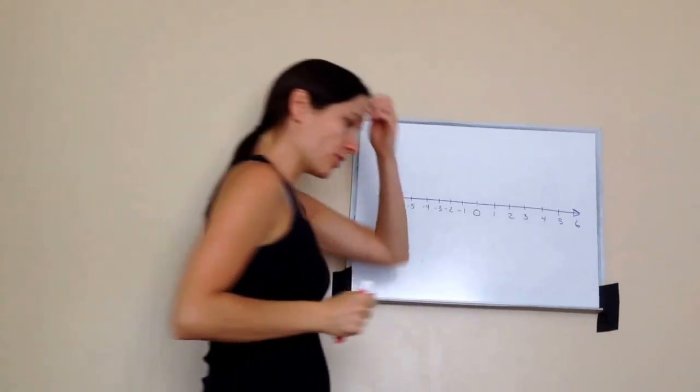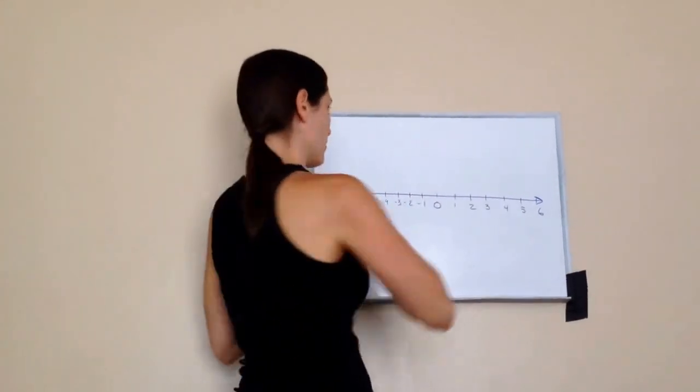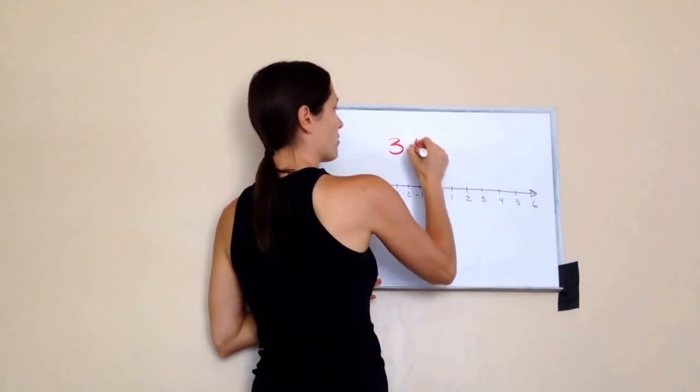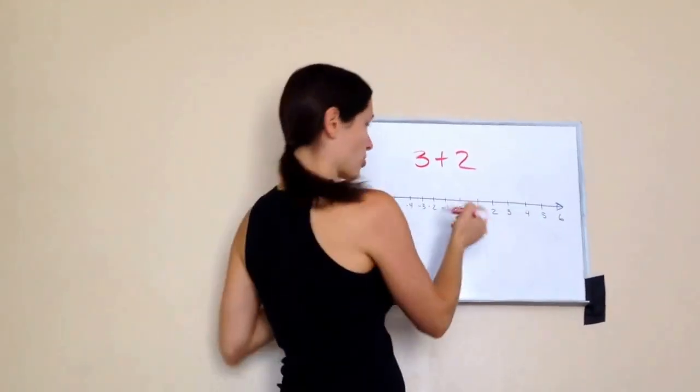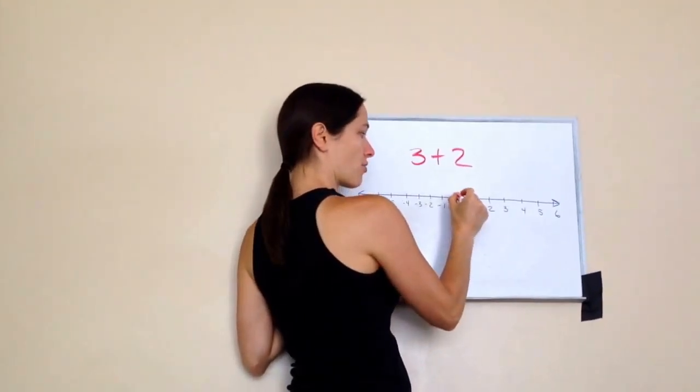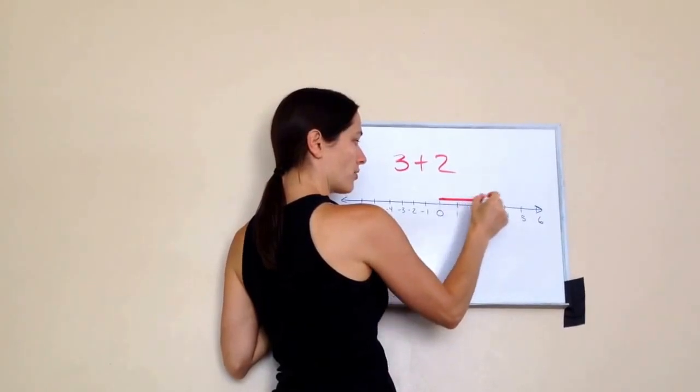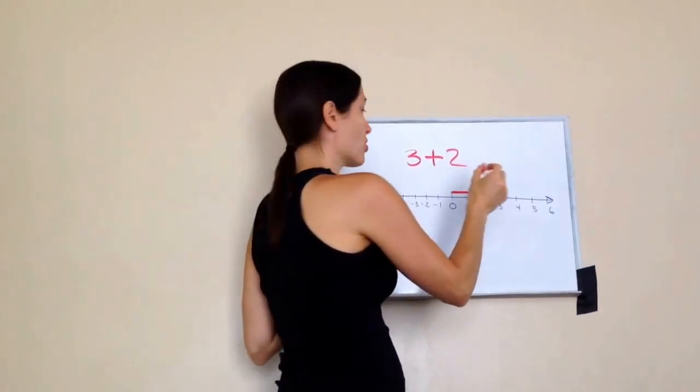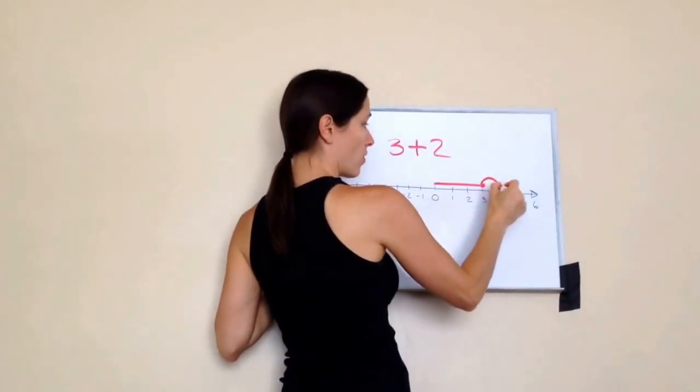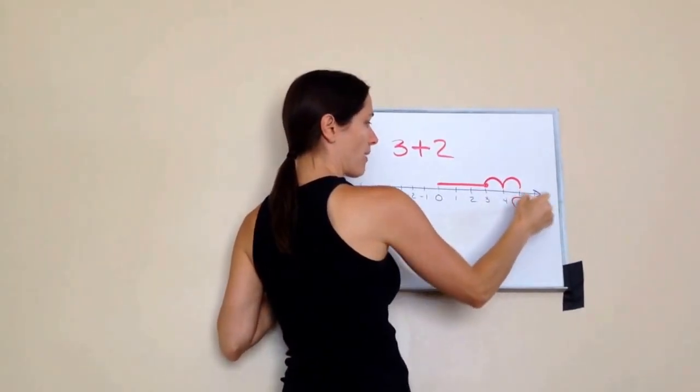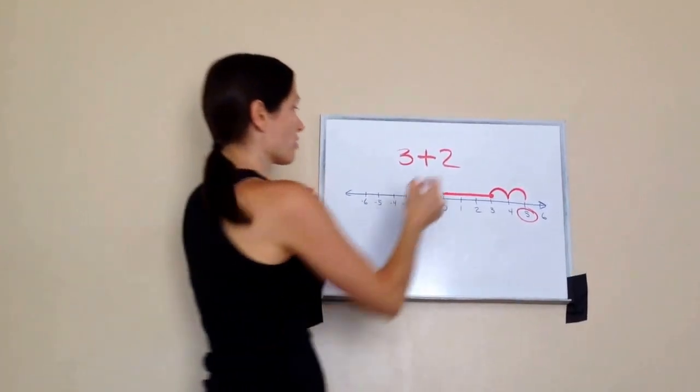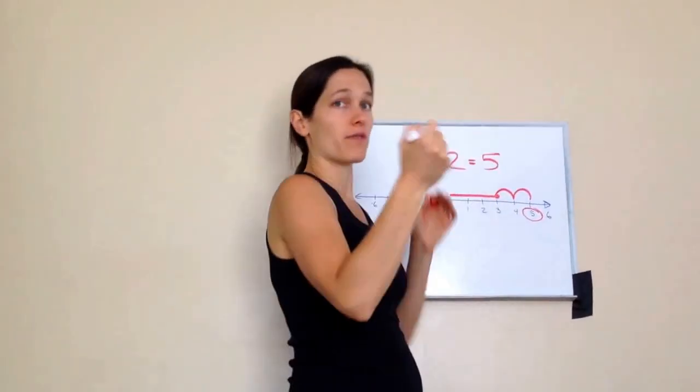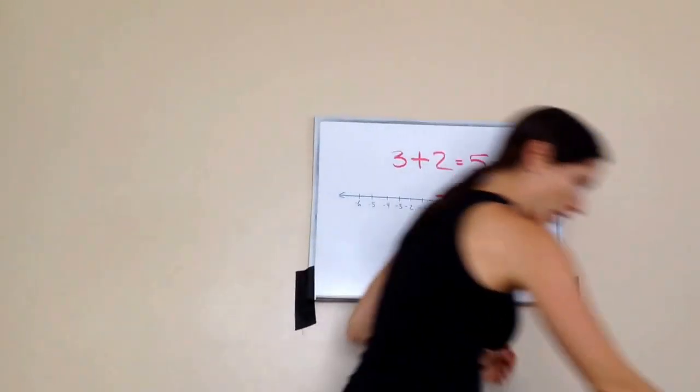Let me show you an addition problem on this number line. For example, let's just do a simple one: 3 plus 2. So I'm going to start at my origin and I'm going to go 3 over. 1, 2, 3. And then I'm going to add 2 more. 1, 2. So what would my answer be? 5. So 3 plus 2, which we already know is 5, but when you do it on the number line, that's what it would look like.